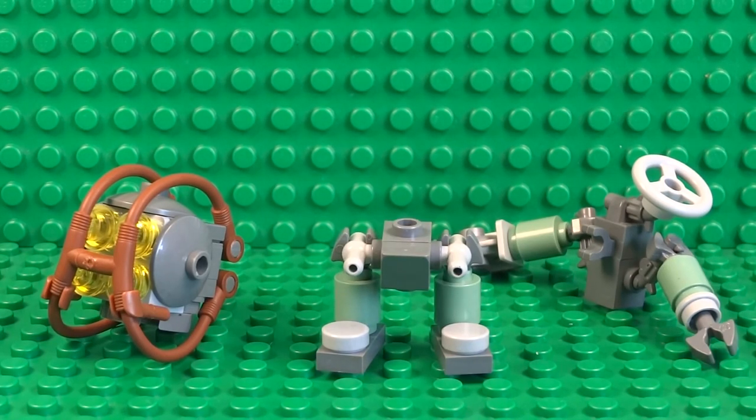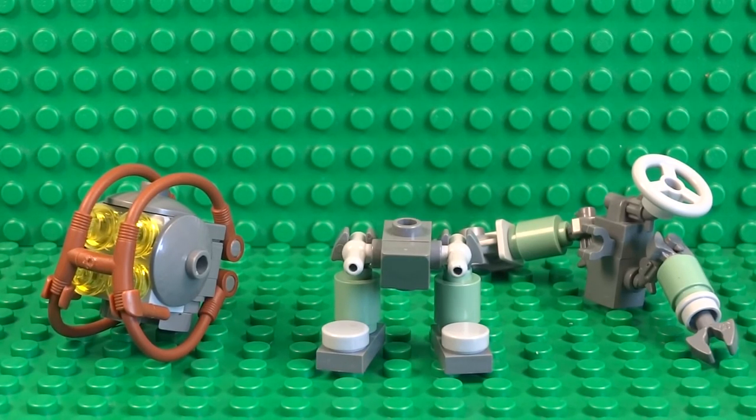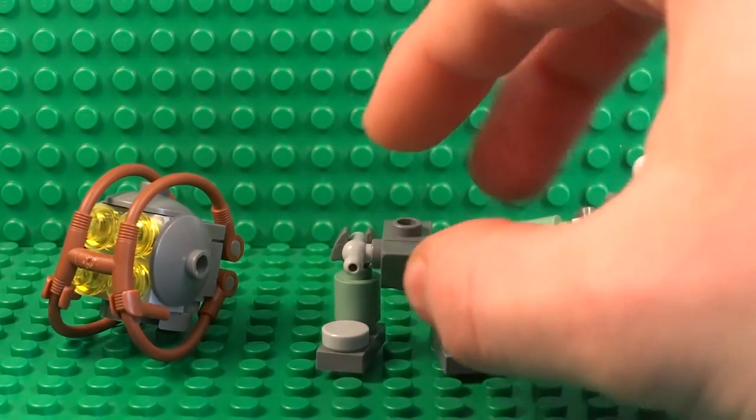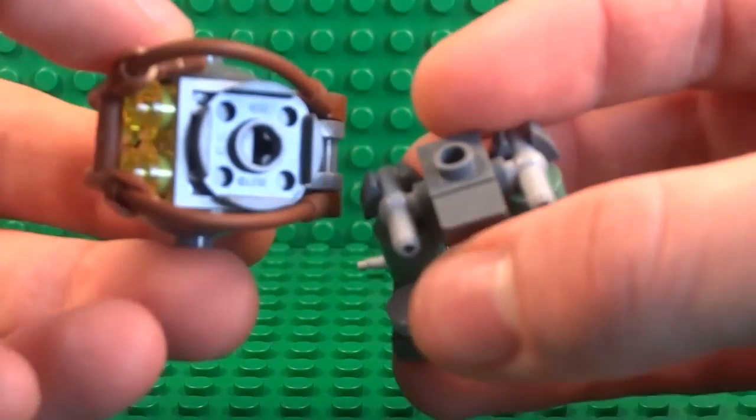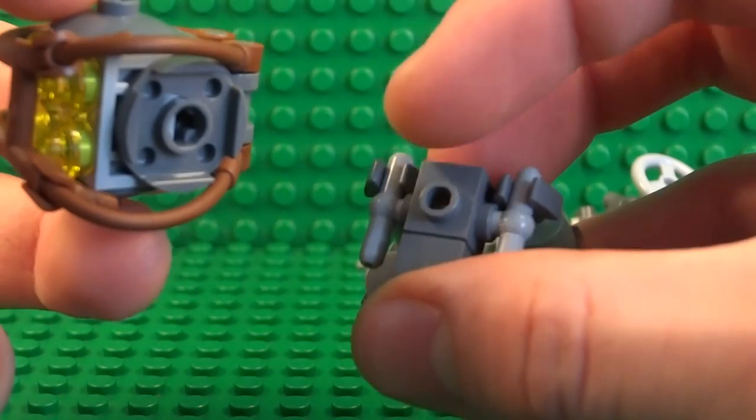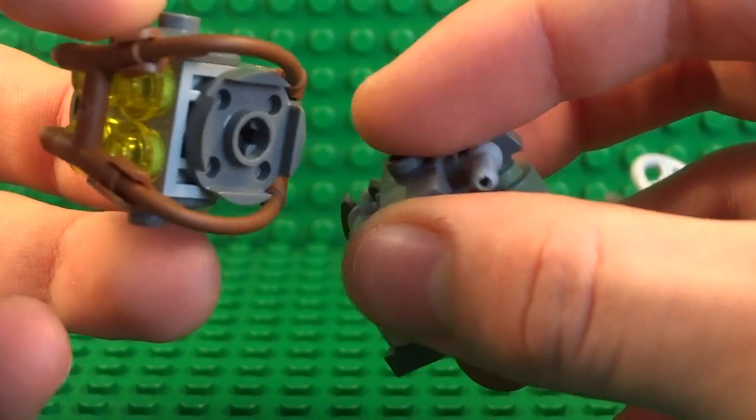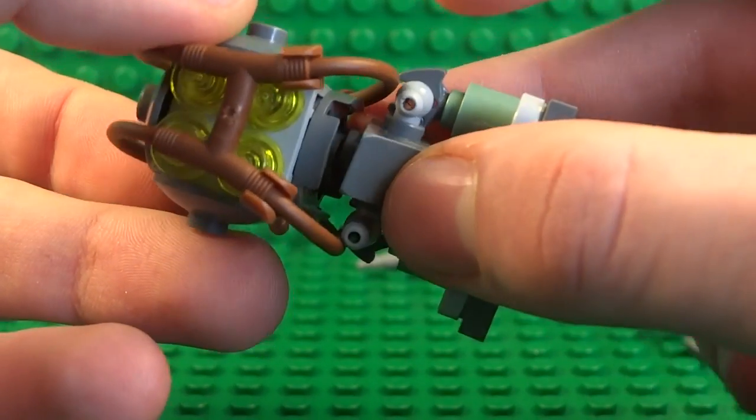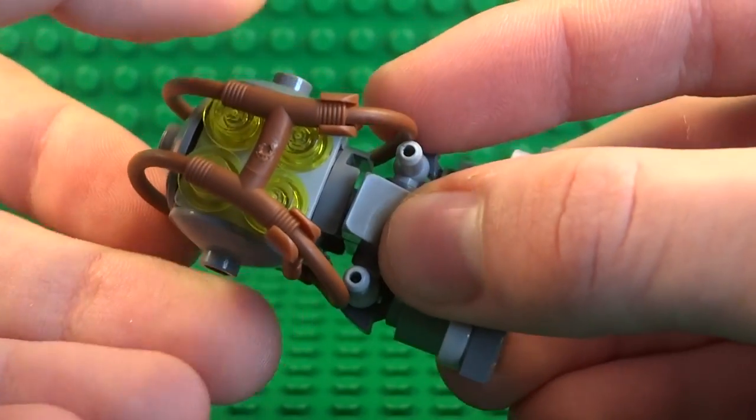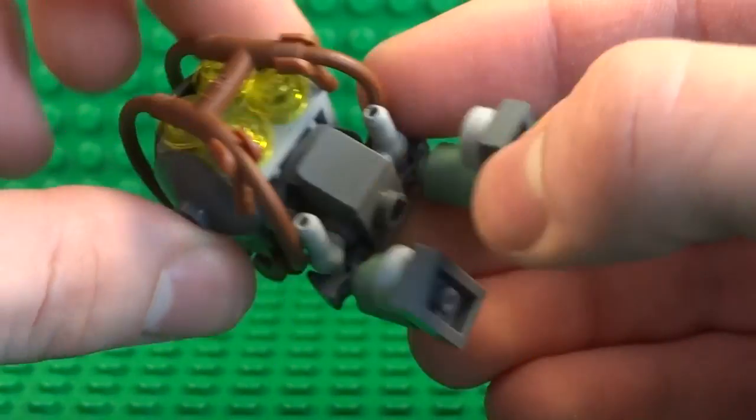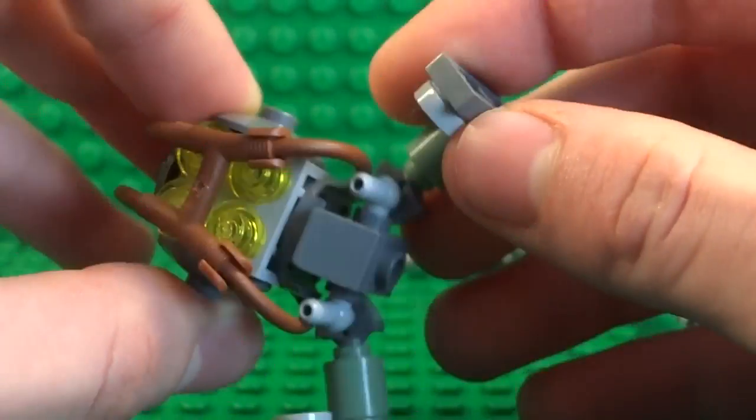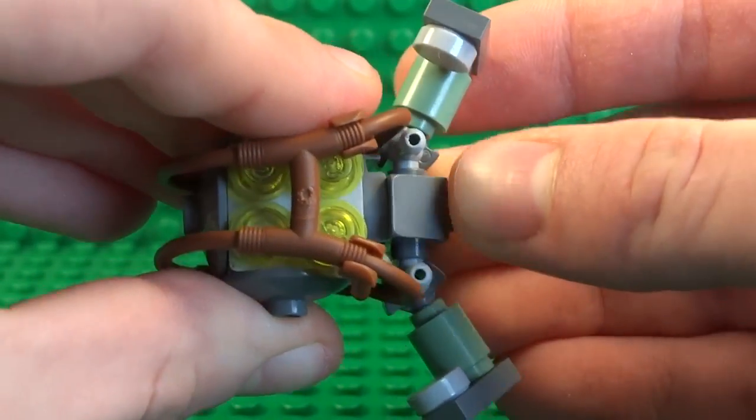So now finally to complete the Big Daddy, take all three of the sections that you've built. And we'll start off with the legs and the body, and to attach those together just simply put the stud in the center in the center of the round plate on the bottom and just clip that in.